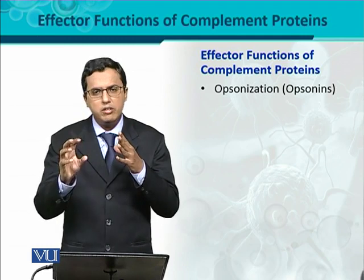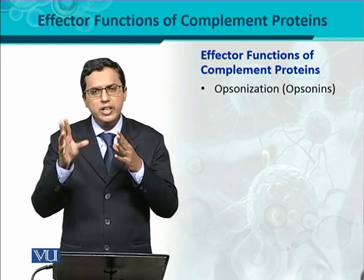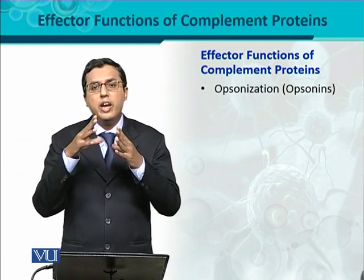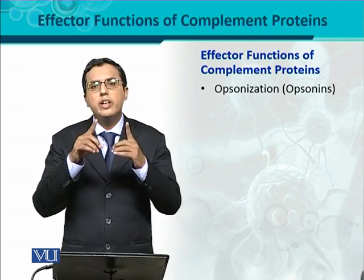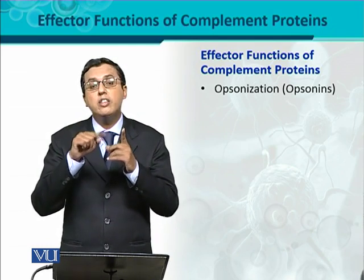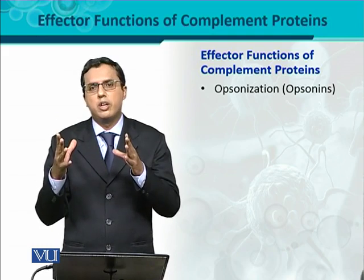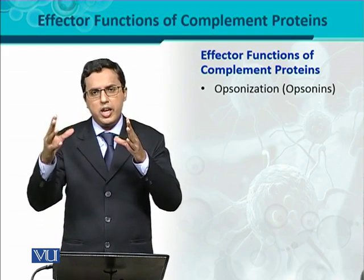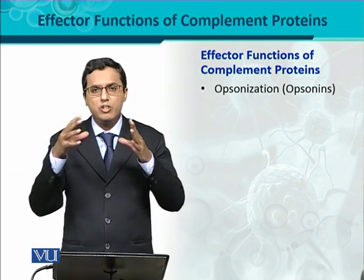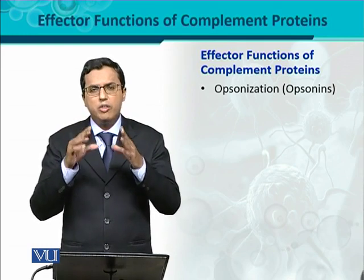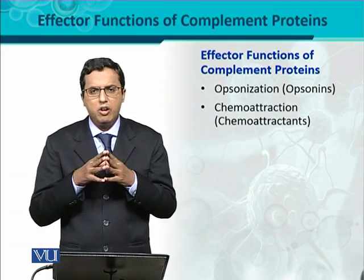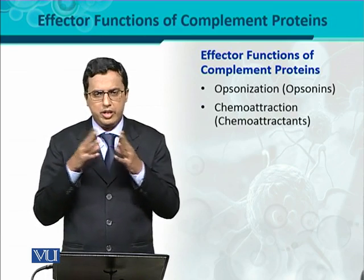These opsonins directly bind onto the surface of the pathogen. As a result, the phagocytes have corresponding complement receptors, so there is an interaction between the complement receptor on the phagocyte and the complement protein already bound on the surface of the pathogen. Due to this interaction, the phagocytosis of that pathogen is increased or enhanced — this process is called opsonization, and such complement proteins are called opsonins.